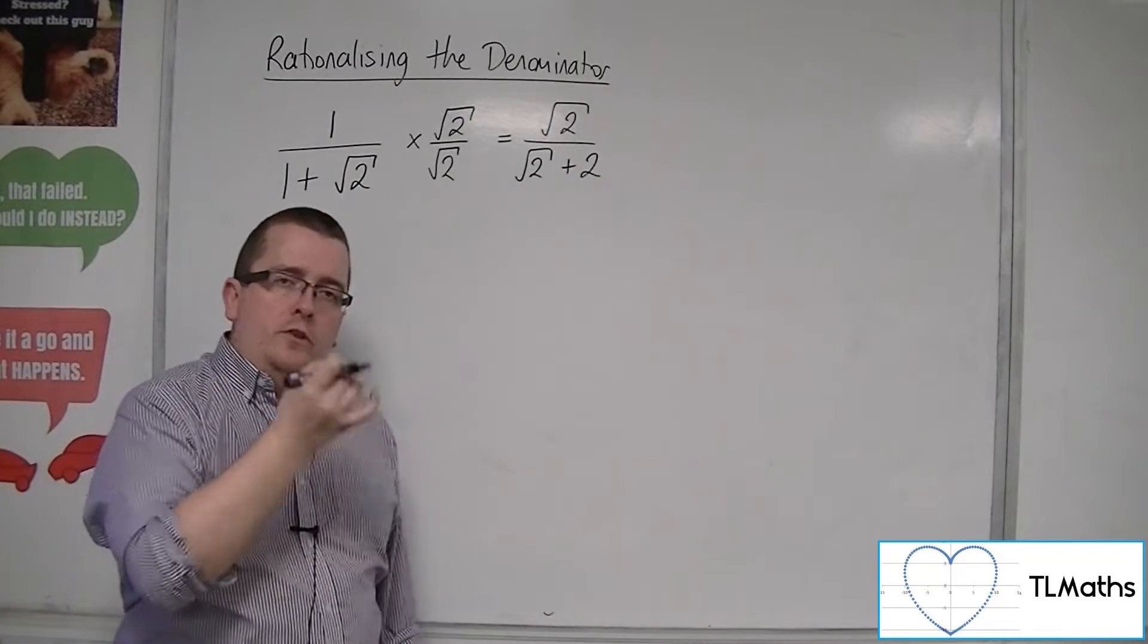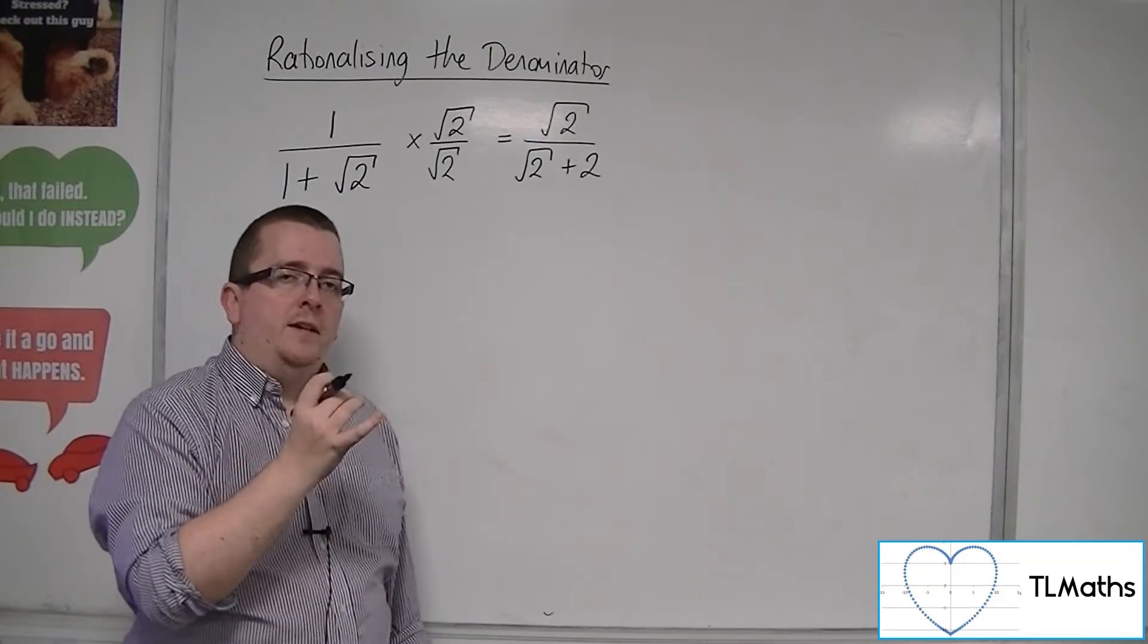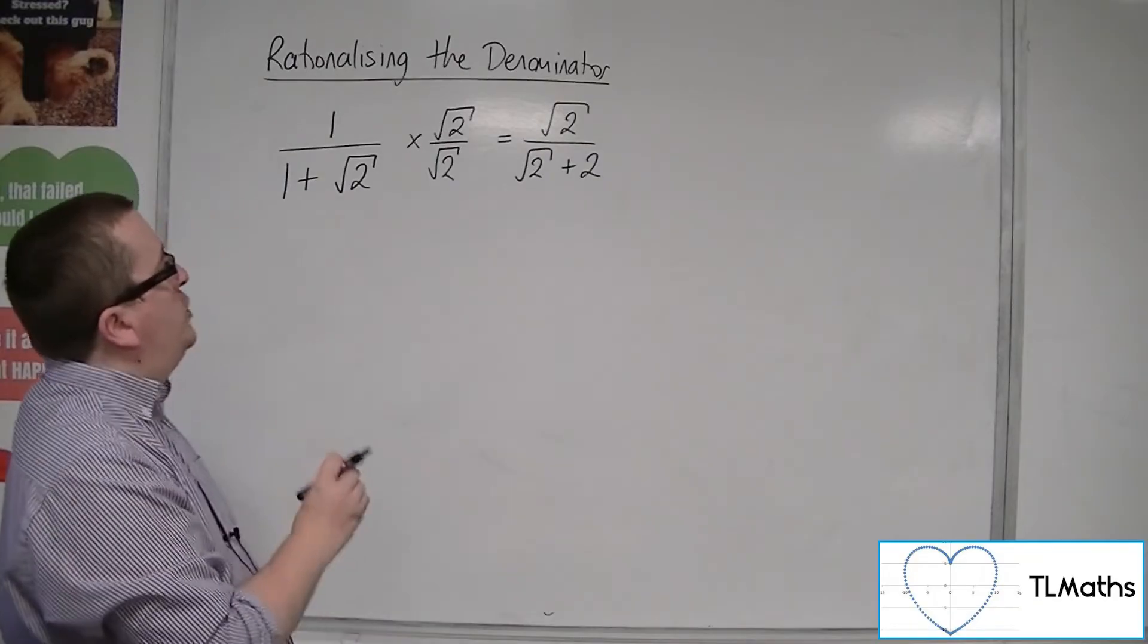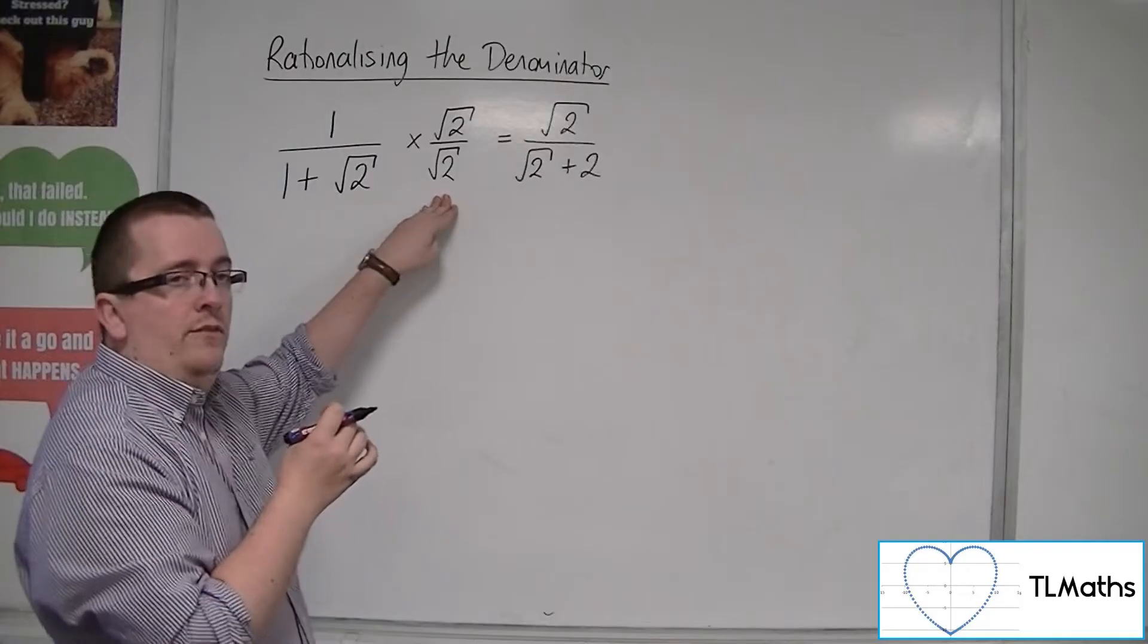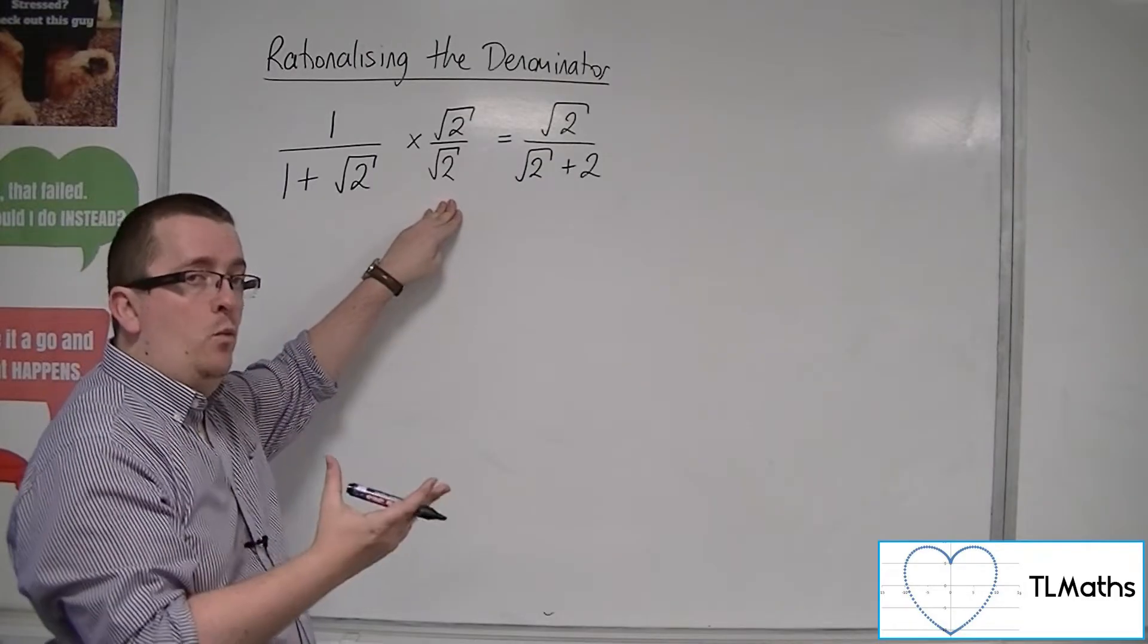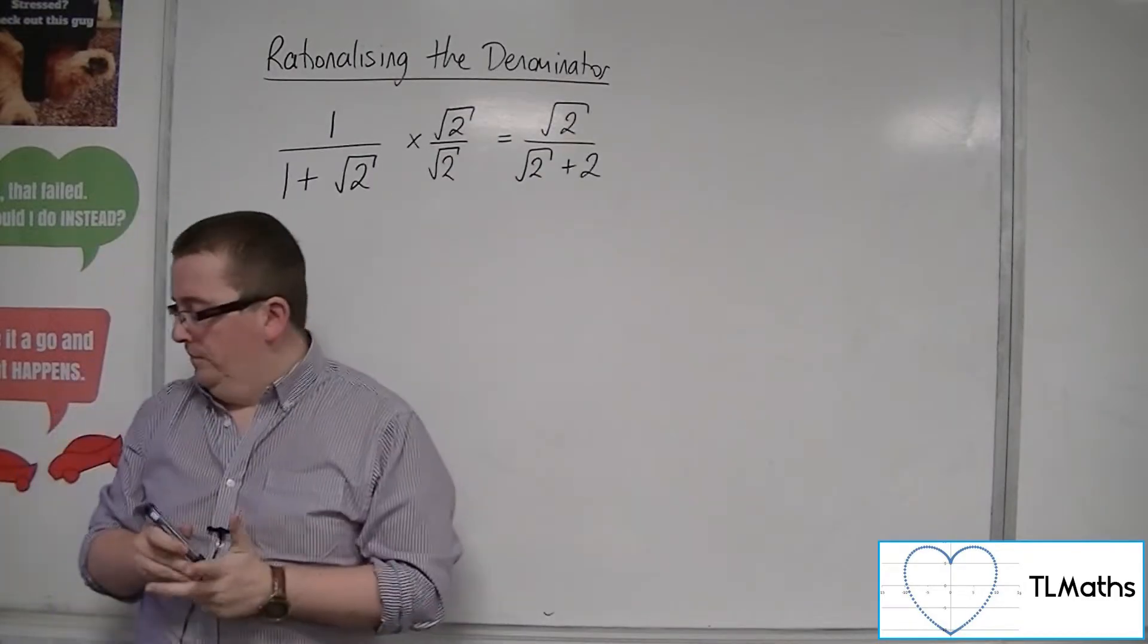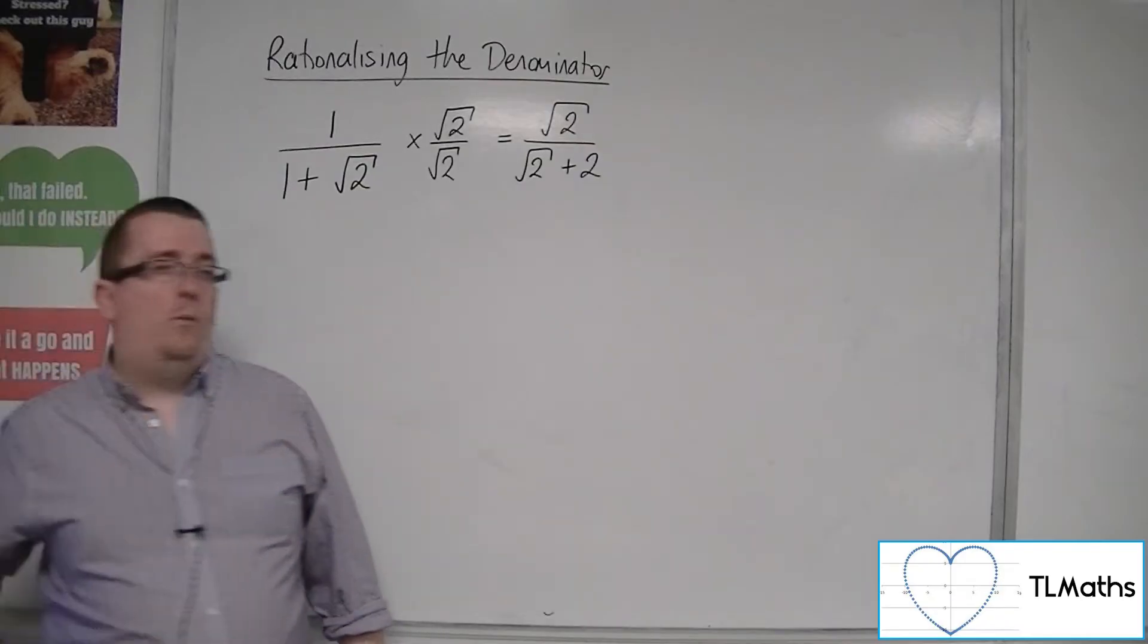We've still got root 2 in the denominator. We've still got an irrational denominator. So this process that we've tried here didn't work. So we can scrub that one off.